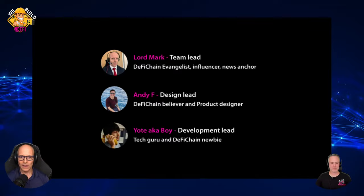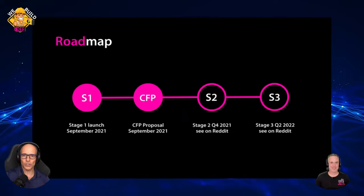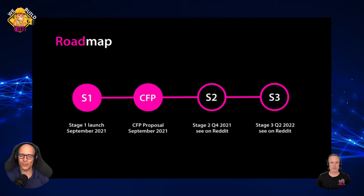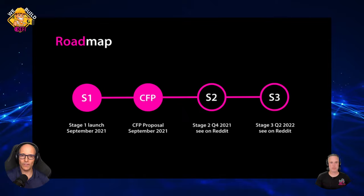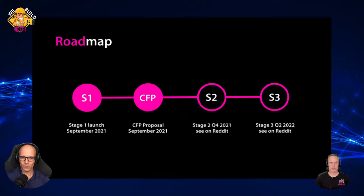Let me show you a little bit about the roadmap. Stage one was launched in September 2021 — the website is online, it's a fully working product and we already have quite a nice number of users and followers. Stage two is the CFP — the Community Fund Proposal — happening next week, and it's planned to be finished in Q4 2021. You can read the details on Reddit. Stage three is the next stage we want to complete in 2022.